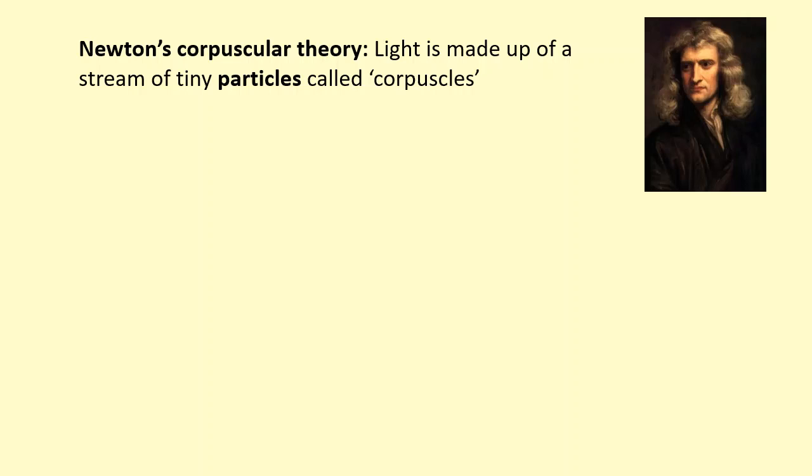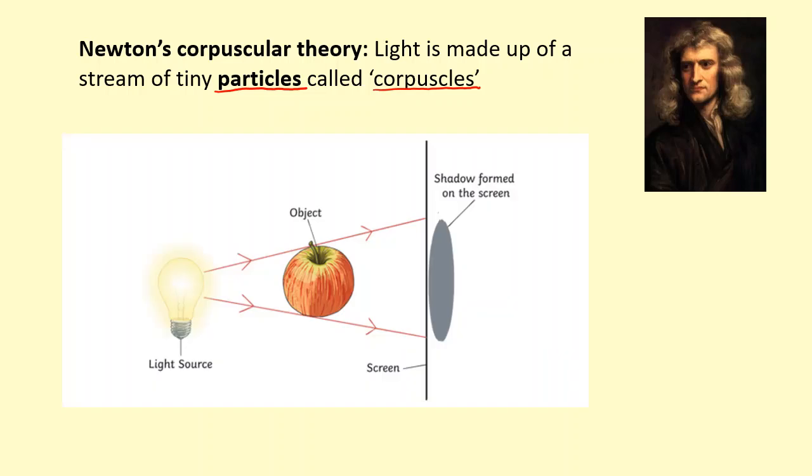We're going to talk about the theories of light, starting with Newton's corpuscular theory. He said that light is made up of a stream of tiny particles called corpuscles. The reason for this, he suggested, is because when you look at shadows they have a sharp edge, so he thought light must travel in a straight line.